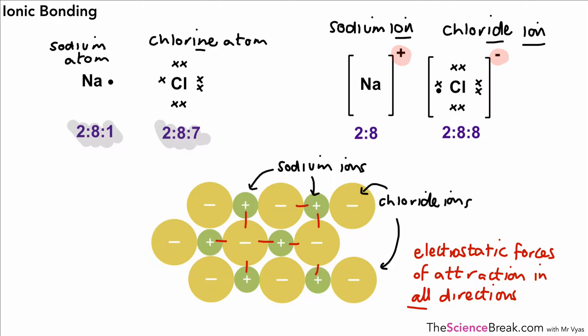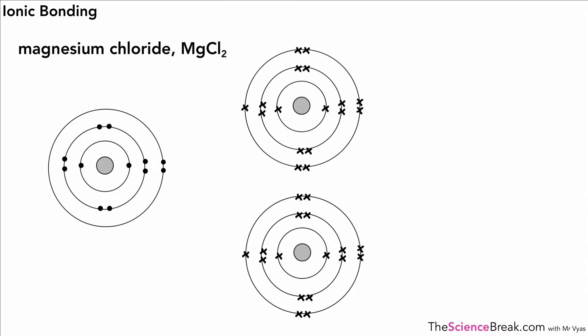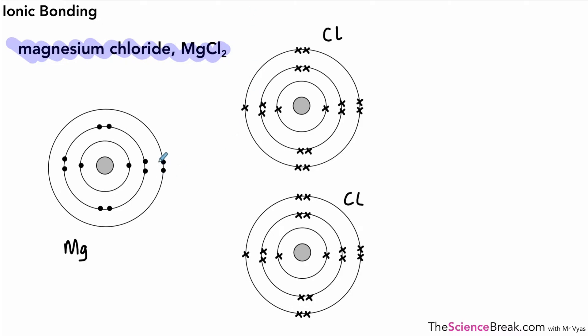There we have a summary of the formation of sodium chloride. Now let's have a go with magnesium chloride. On the left hand side we have an atom of magnesium and two atoms of chlorine — you'll see why we need two in a moment.